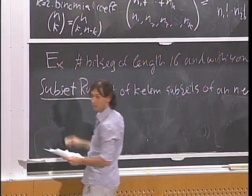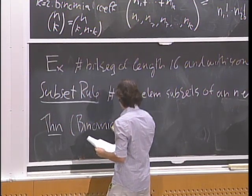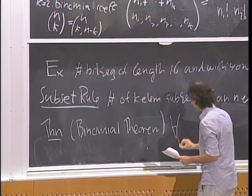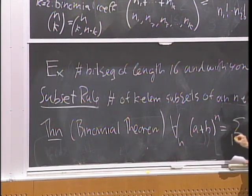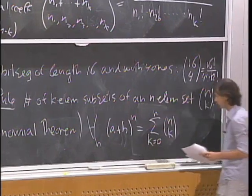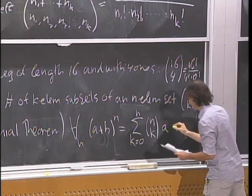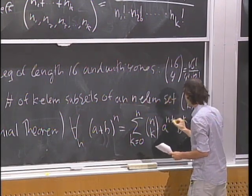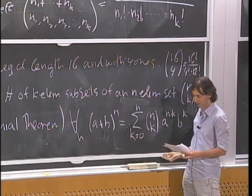A theorem derived from all this is the binomial theorem. For all positive integers n, we have that (a+b)^n equals the sum from k=0 to n of (n choose k) times b^k times a^(n−k). I'll explain this with an example.